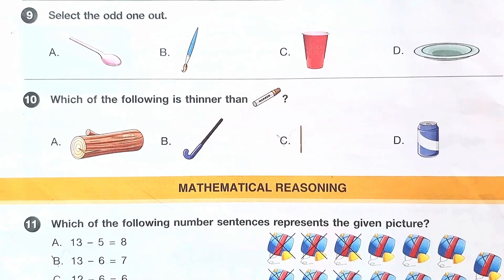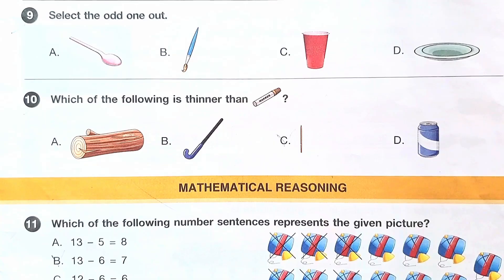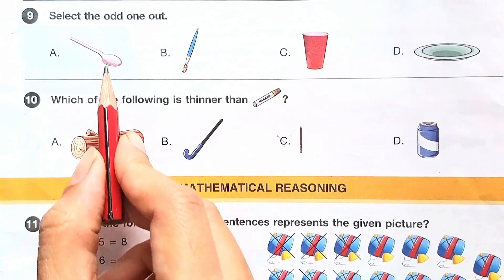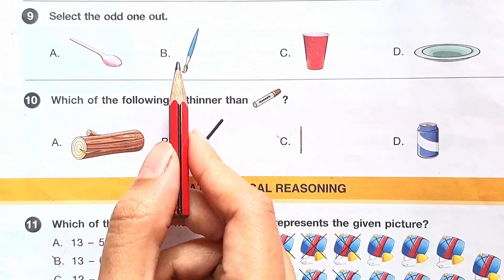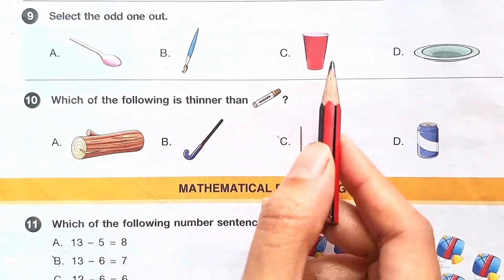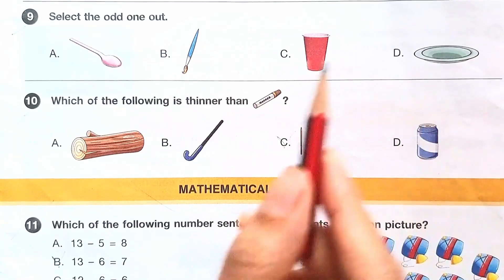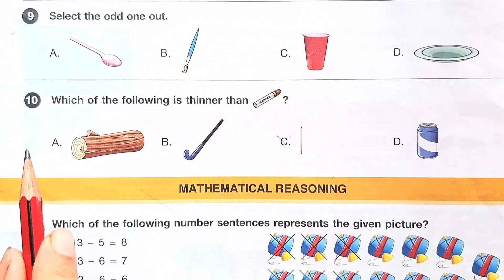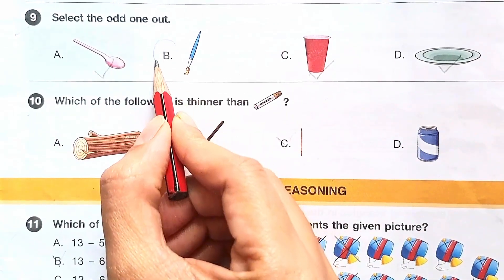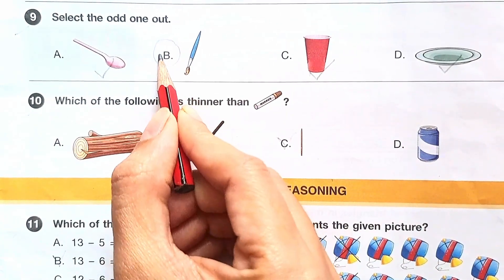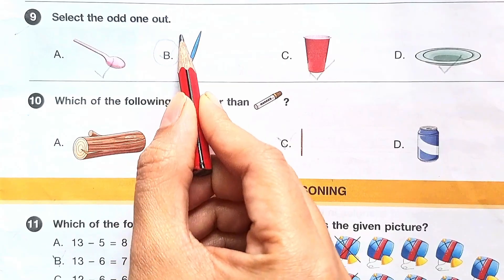Question number 9: select the odd one out. Let us see what options are given — spoon, brush, glass, and plate. Only one of these is different. So the answer is option B.